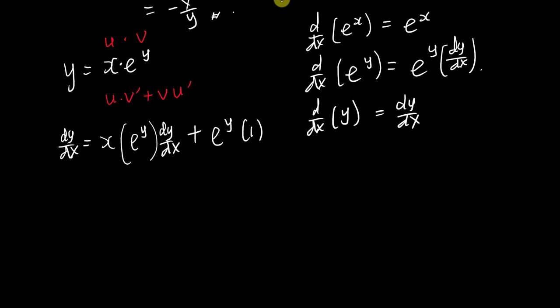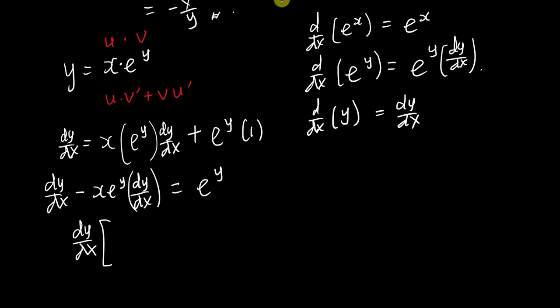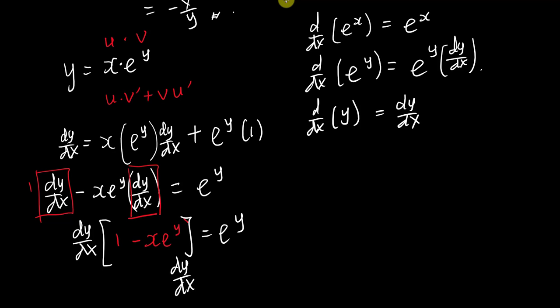To find dy/dx I make it the subject. Moving x·e^y·dy/dx to the left: dy/dx − x·e^y·dy/dx = e^y. Factorizing out dy/dx: dy/dx·(1 − x·e^y) = e^y. Therefore dy/dx = e^y / (1 − x·e^y).